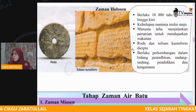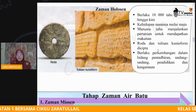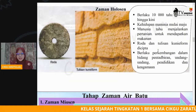Seterusnya roda dan tulisan kuneiform mula dicipta — maksudnya berlaku kemajuan. Mereka sudah pandai mencipta tulisan-tulisan kuneiform. Kuneiform ini merupakan salah satu bentuk tulisan yang hanya difahami oleh manusia pada zaman tersebut. Pada waktu itu, tulisan abjad A, B, C, D itu tidak wujud lagi.